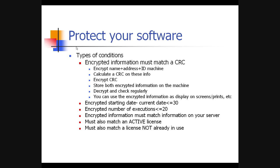With server-based validation, even if someone copies the software with the same license key to multiple machines, it can't be used on two machines simultaneously. That's also a solution for the user who wants to work at home and at the office on one license — you store both machine IDs, and when the software is used on one machine, the other stops working. The check runs in a secondary thread and is very fast, so it won't disturb the user.